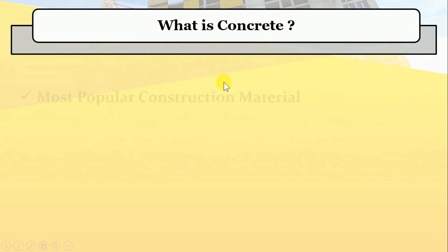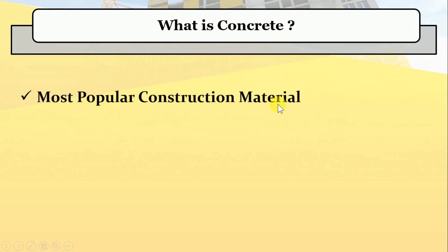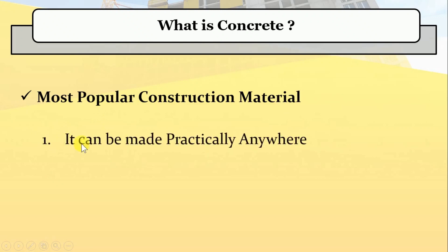What is concrete? Concrete is the most popular construction material used for the construction of different structures. Because of several reasons, concrete is more popular than other construction materials. The first reason is that concrete can be made practically anywhere — in remote sites like in a jungle or in the middle of a city — as long as you can transport cement to a certain site, then it is easy to make concrete there.